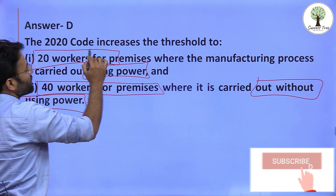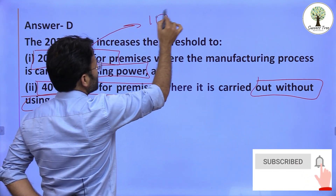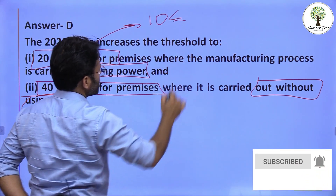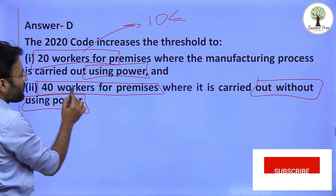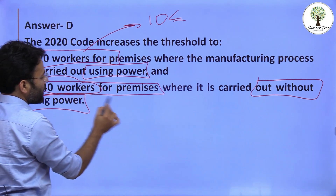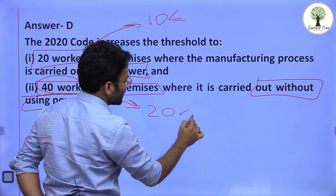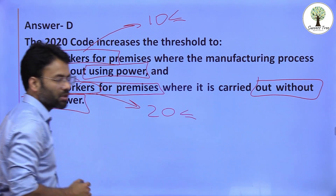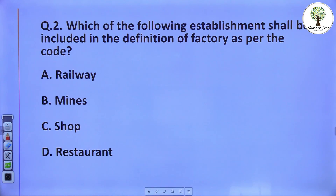If you have revised the Factories Act, you will recall that under the Factories Act the 'with power' provision was 10 or more workers, and the 'without power' provision was 20 or more workers. So we can revise both provisions together: the new labour code has increased these thresholds compared to the old Factories Act.